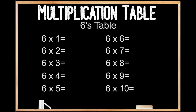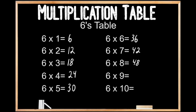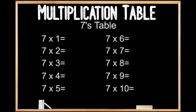6's table. 6 times 1 is 6. 6 times 2 is 12. 6 times 3 is 18. 6 times 4 is 24. 6 times 5 is 30. 6 times 7 is 42. 6 times 8 is 48. 6 times 9 is 54. And 6 times 10 is 60.